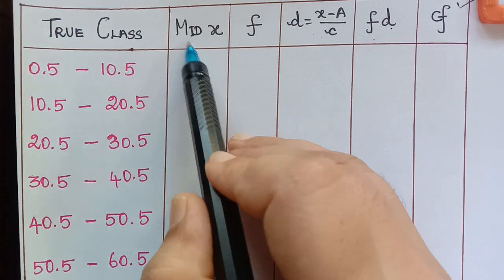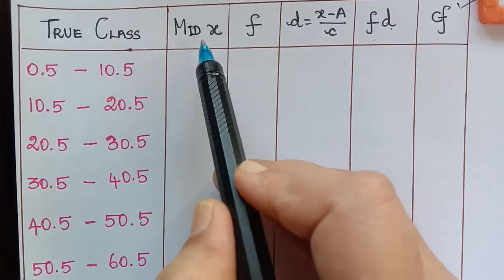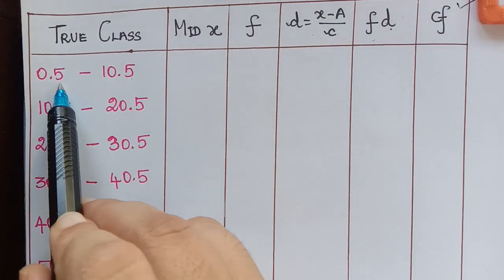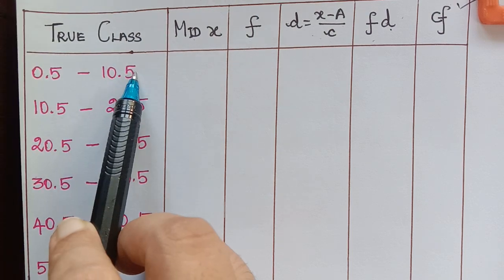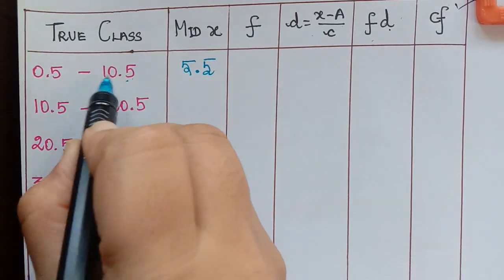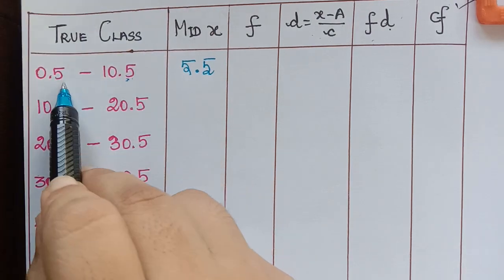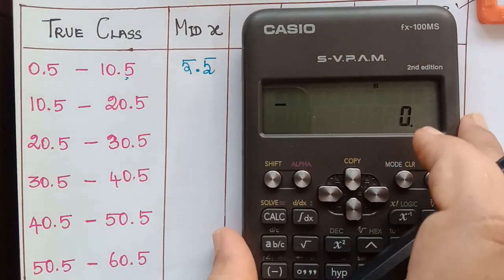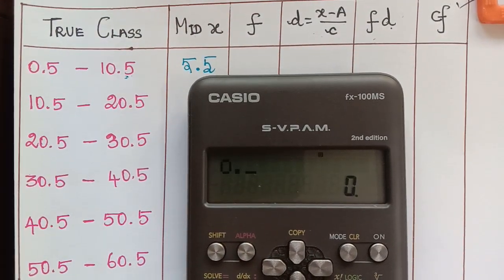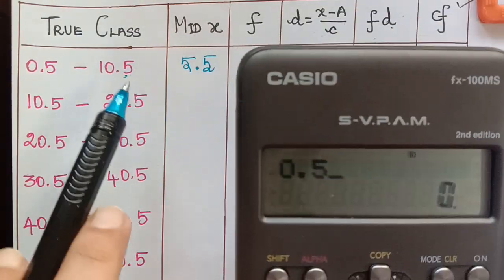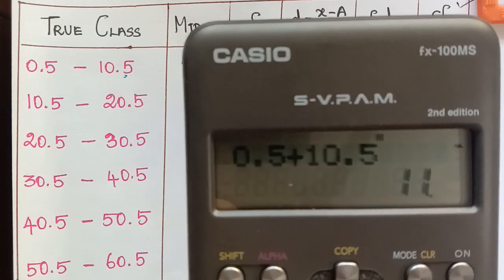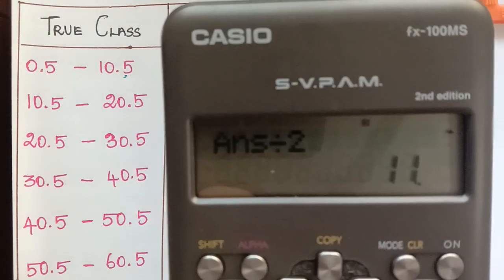To find the arithmetic mean, first we find mid x — the values which fall in the middle of each interval. For example, the middle value of 0.5 to 10.5 is 5.5. Using the calculator: lower limit 0.5 plus upper limit 10.5 equals 11, divided by 2 equals 5.5. That is the mid value of this interval.